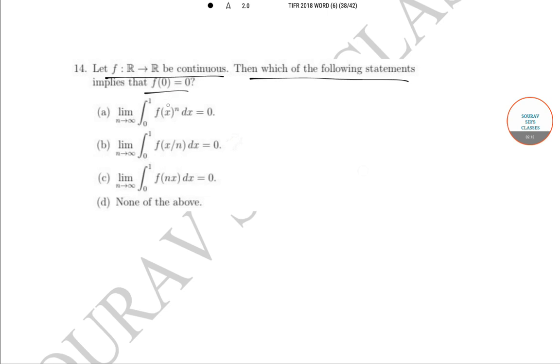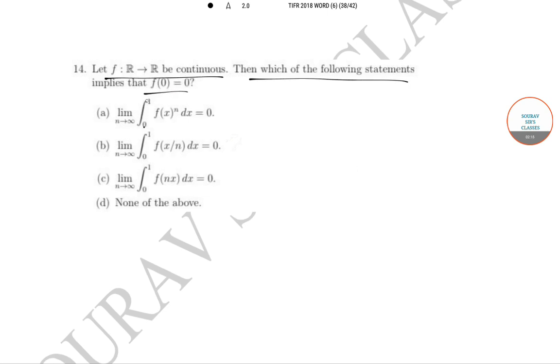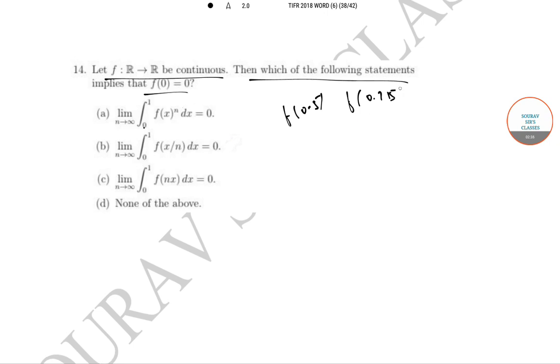We can't conclude anything from option A because f(0.5), f(0.75), and these values raised to the power infinity may become extremely large, and this may not equal 0. So option A is incorrect.